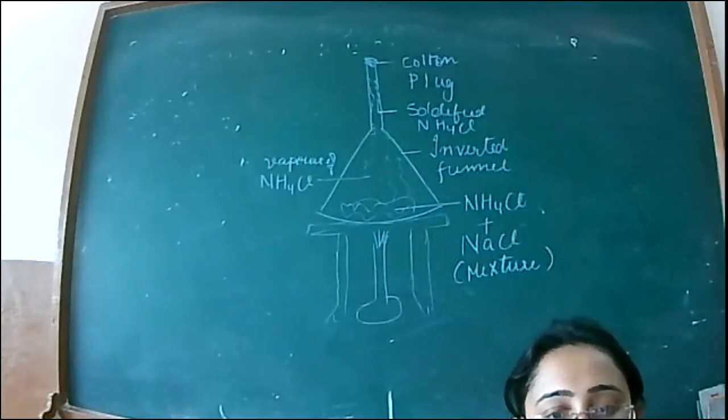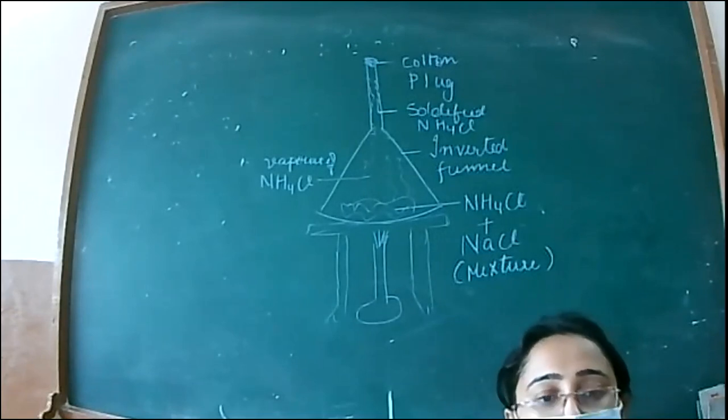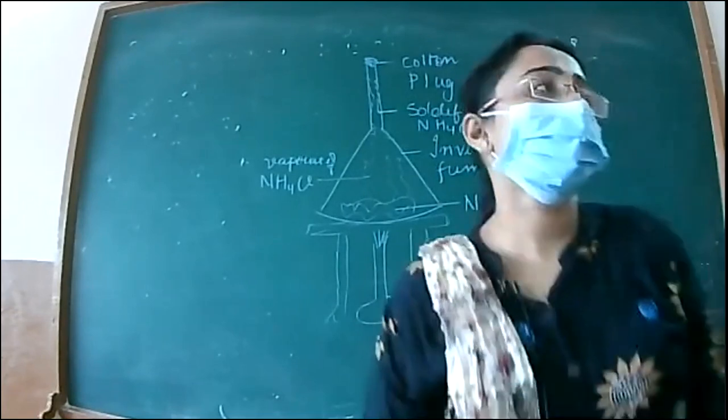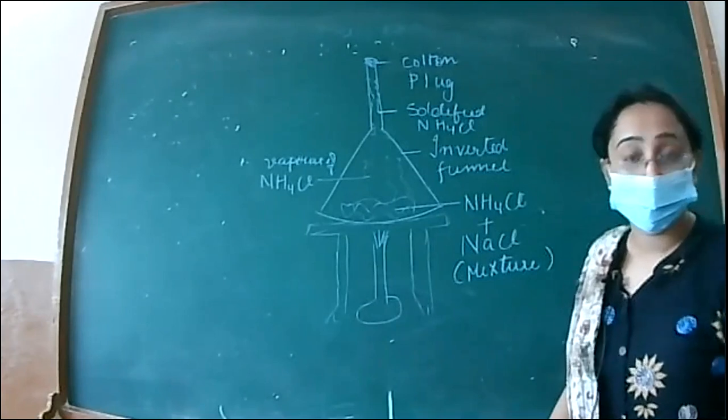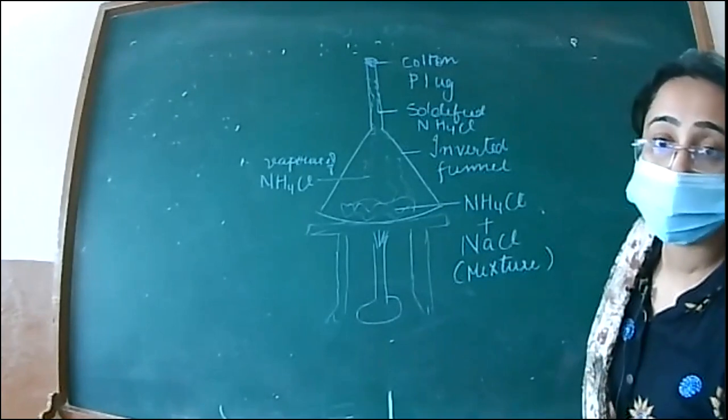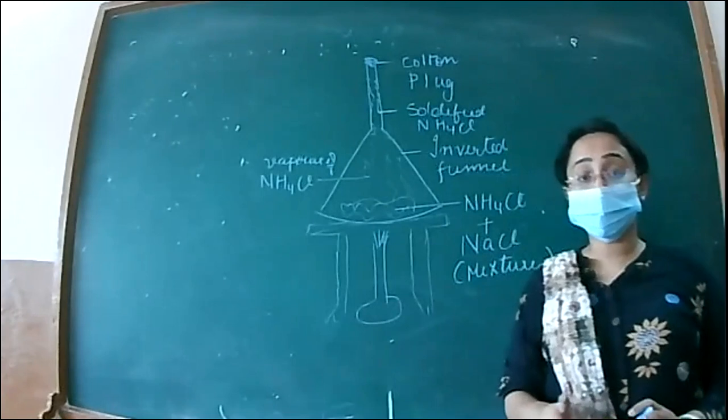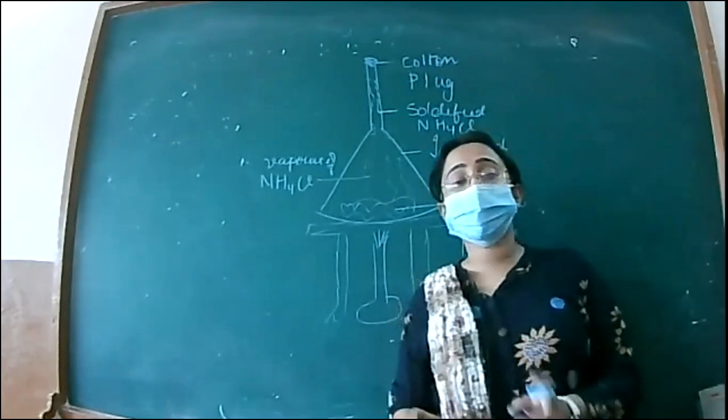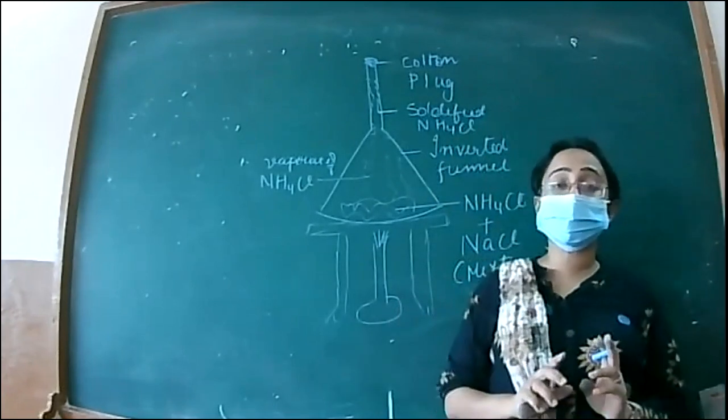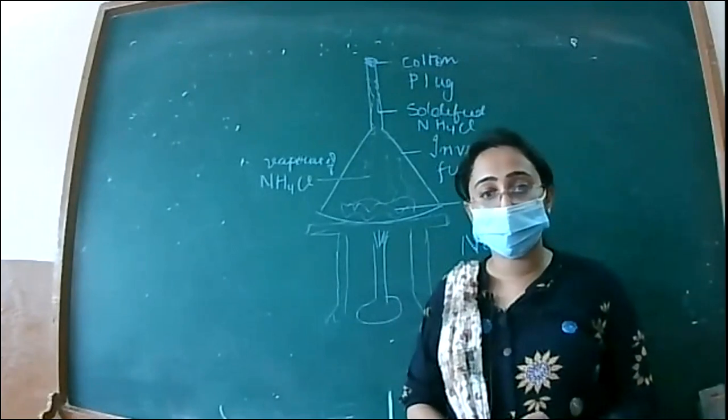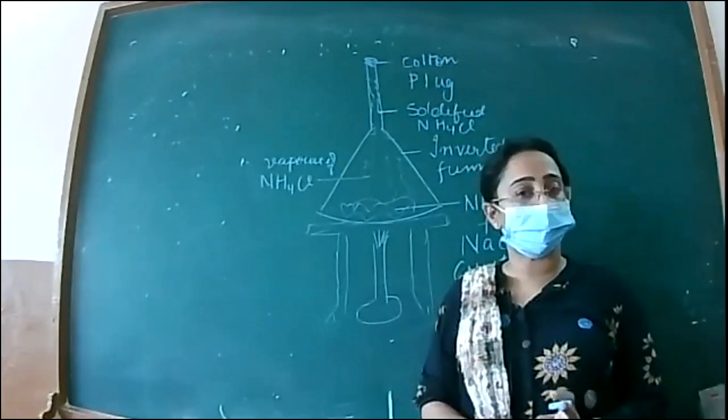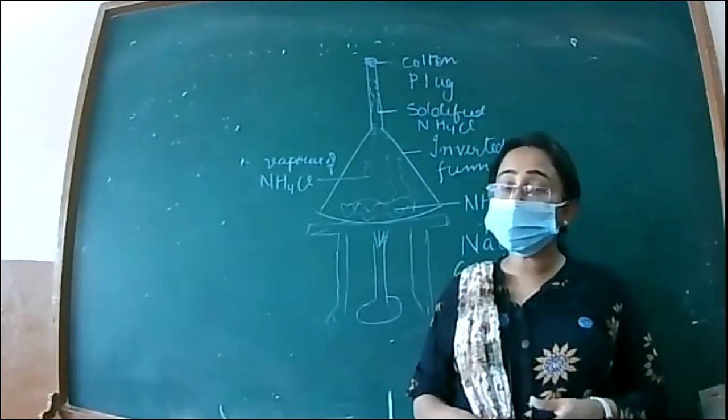Yesterday we have also done how to separate out the ink component, that is volatile component from the non-volatile component. So we did three techniques of separation. The first was evaporation. In evaporation, remember, we have separated out solute which is a non-volatile one and the solvent which is a volatile one.